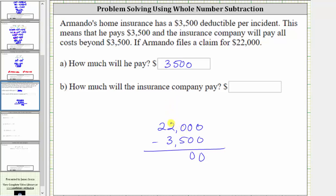We exchange one thousand for 10 hundreds. Now we have a 10 in the hundreds place value. 10 minus five is five.